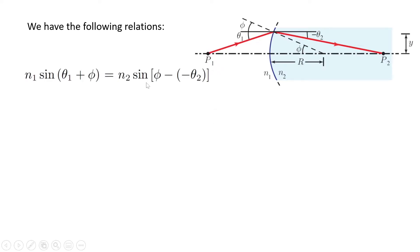Then I can obtain the refraction angle, and if I substitute in Snell's law, I obtain this relation: n1 sine of (theta 1 plus phi) is equal to n2 sine of [phi minus (-theta 2)].